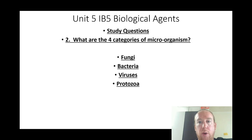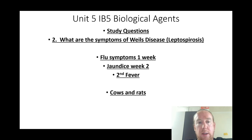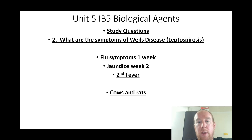What are the four characteristic categories of microorganism? Fungi, bacteria, viruses, protozoa, and parasites. What are the symptoms of Weil's disease (leptospirosis)? Flu symptoms for a week, then jaundice for a week to two weeks of fever with jaundice — associated with cows and rats.